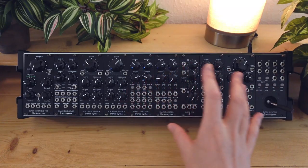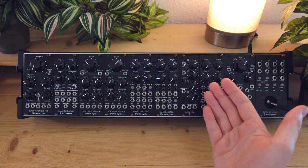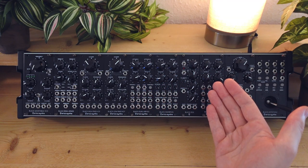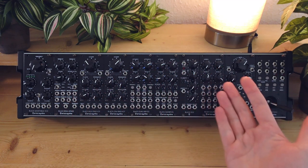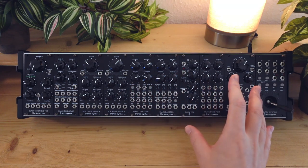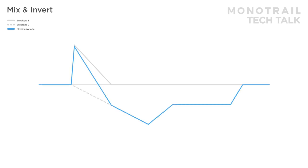Sometimes you can find inverted outputs on an envelope generator. Sometimes you don't need it because you might have an attenuverter on the module you want to modulate — for example, these filters have attenuverters. Otherwise, an external attenuverter is a useful tool to have, not just for envelopes. Of course, you can combine both tricks — for example, mix a positive attack decay envelope with an inverted ADSR. This creates a shape that briefly spikes, then drops down, holds a negative voltage, and glides back up to zero volt when you release the key.